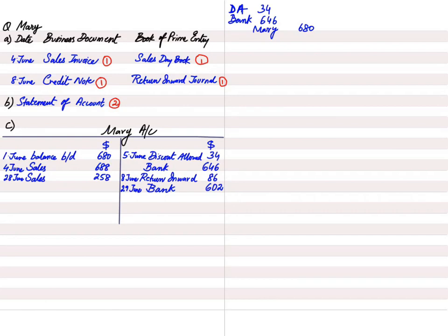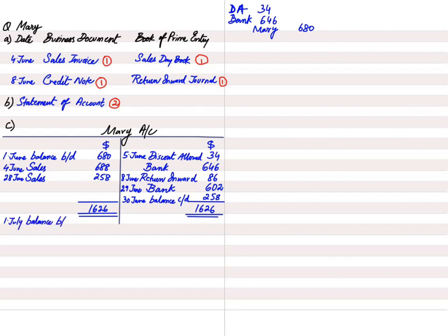To balance the account — this is a debtor account, which is an asset for the business, so the debit side is the bigger side. The total is 1626. The shorter side gets a balance carried down figure, and that balance carried down at the end of the period becomes balance brought down at the start of the next period (July). This completes part C, making the T account for the customer.